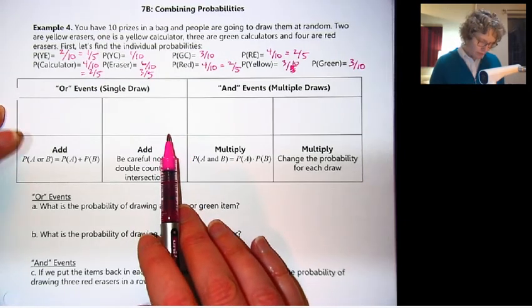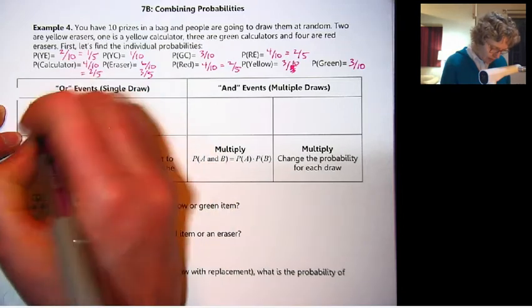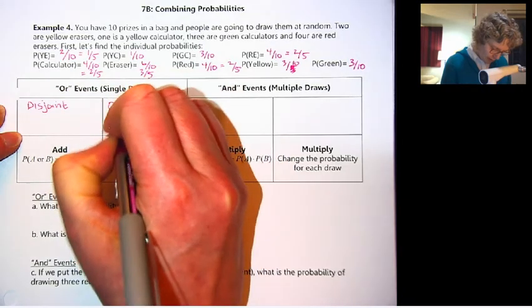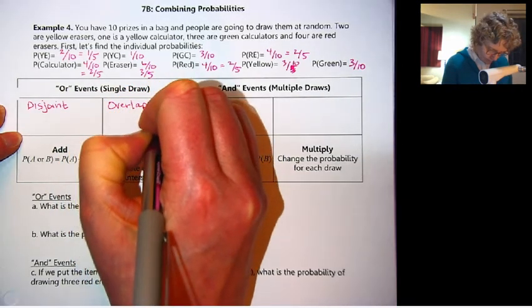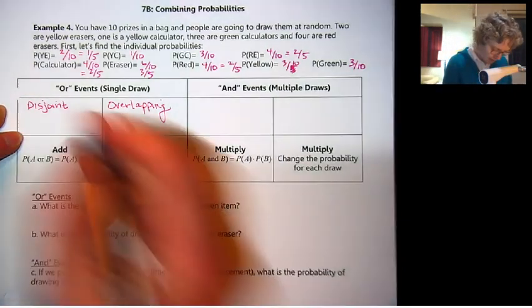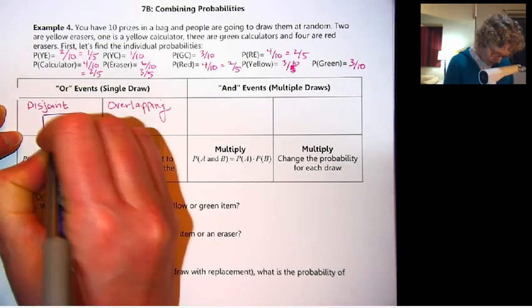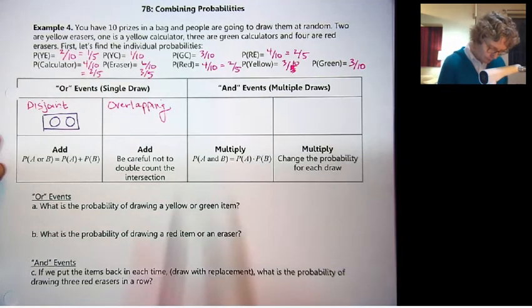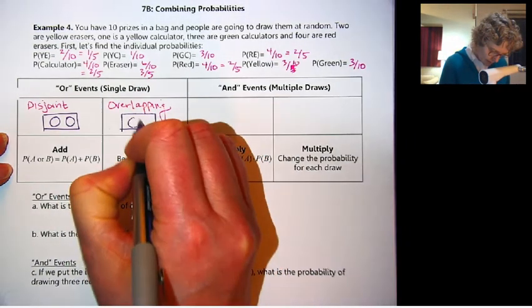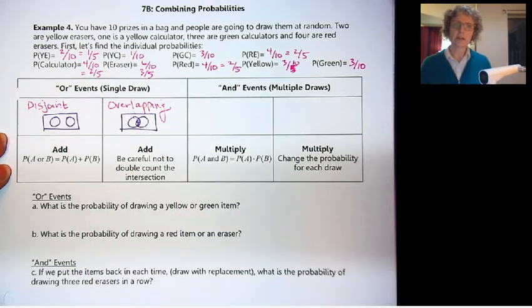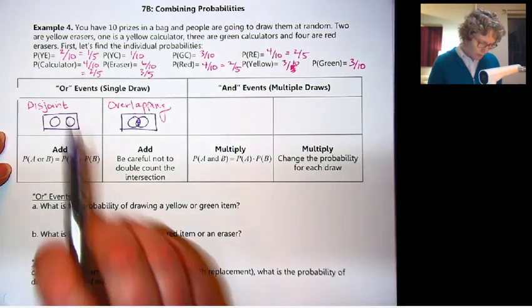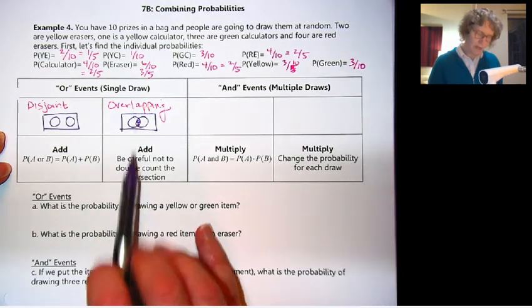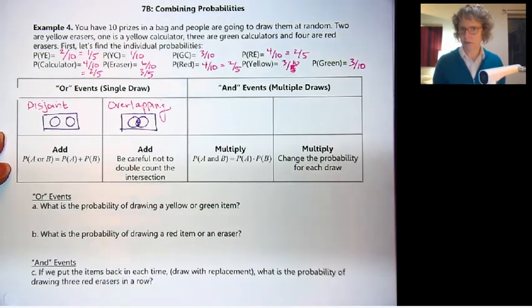There's two different possibilities. Either the events could be disjoint or overlapping. You know about these words from doing Venn diagrams. Disjoint are two separate events. They can't overlap each other. Overlapping means they do overlap. They have an intersection in the middle.